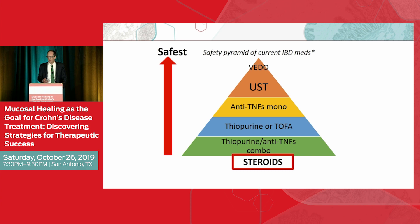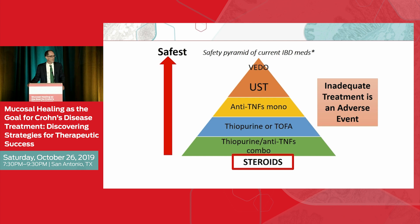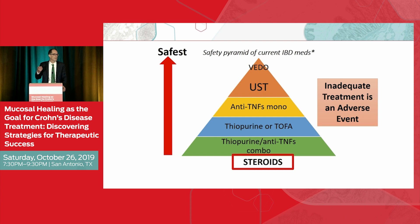If you have patients who are stuck on steroids for a long period of time, that is probably the least safe medicine in terms of damage. We also need to keep undertreatment in mind — not just a little active disease, but deep ulcers and very inflamed segments. Can we heal every last ulcer in Crohn's? Probably not. But patients with extensive inflammation are the ones who ultimately require surgery, and if they have a long small bowel segment resected, you're seeing them in your office with short bowel syndrome. Inadequate treatment is another potential adverse event.